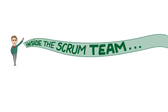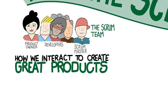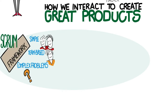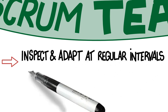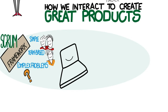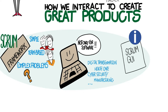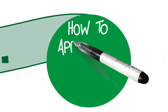Welcome to Inside the Scrum Team. In part one of this video you'll discover how a scrum team interacts with the outside world to create great products. Scrum is a simple team-based framework for solving complex problems. If you only remember one thing about scrum, remember this: inspect and adapt at regular intervals, and tell yourself the truth. Scrum was created for software development where it is widely used, but today it finds application in many other complex domains like digital transformation, healthcare, cyber security, and manufacturing. The definitive description is found in the Scrum Guide, which is both the reference and the place to start.